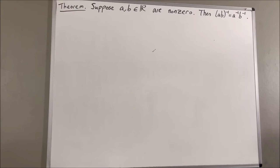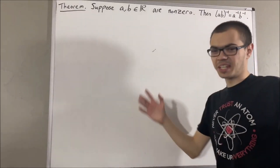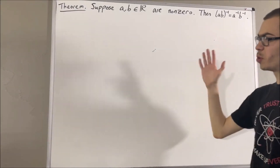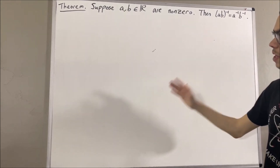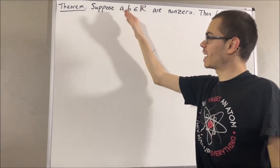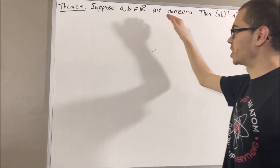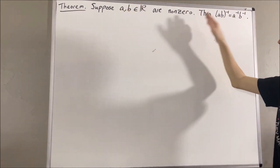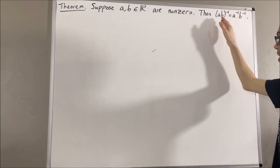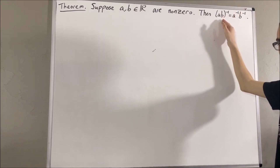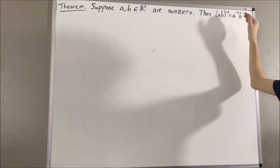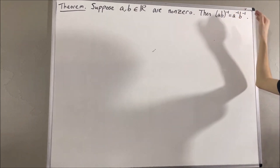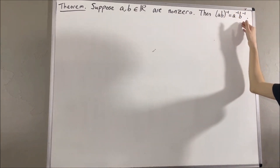Hello! In this video, we are going to prove the following theorem. Suppose A and B are non-zero real numbers. Then, the reciprocal of AB is equal to the reciprocal of A times the reciprocal of B.